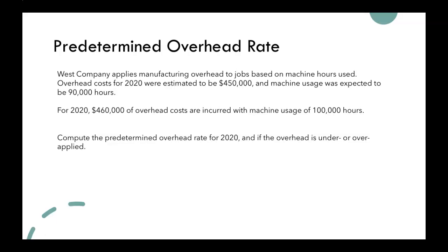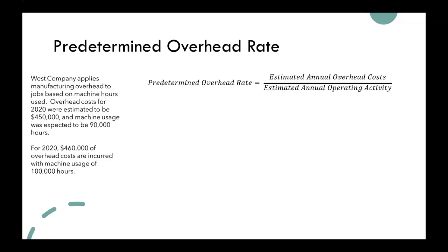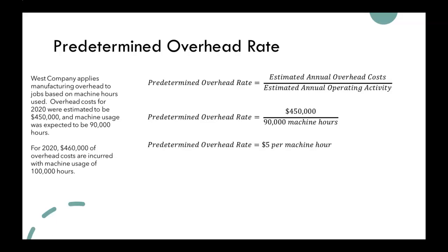Using that information, we will be able to compute the predetermined overhead rate for 2020 and determine if the overhead was under or over applied. Let's first calculate our predetermined overhead rate. We have all the information we need. The equation is our estimated annual overhead costs divided by our estimated annual operating activity — that's our $450,000 divided by our 90,000 machine hours — which gives us a predetermined overhead rate of $5 per machine hour.